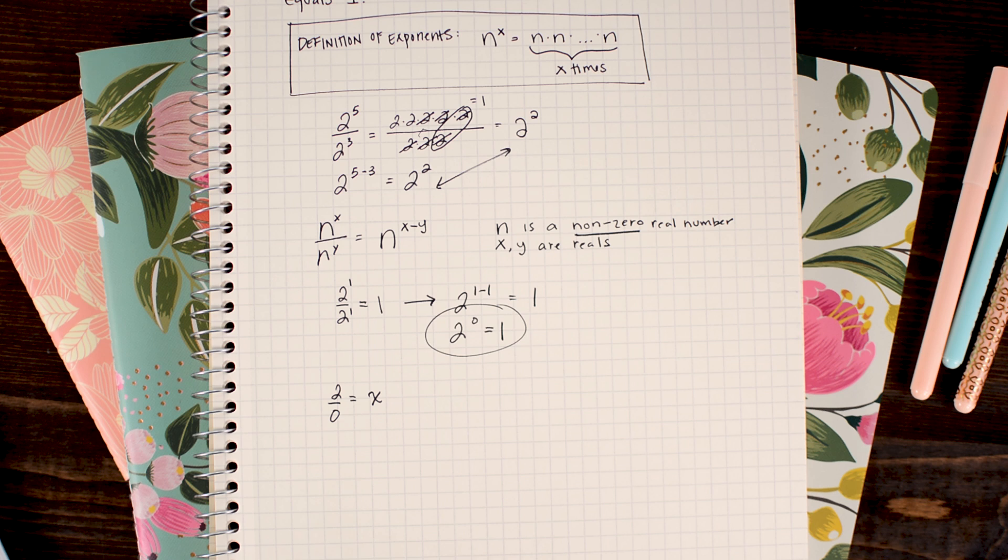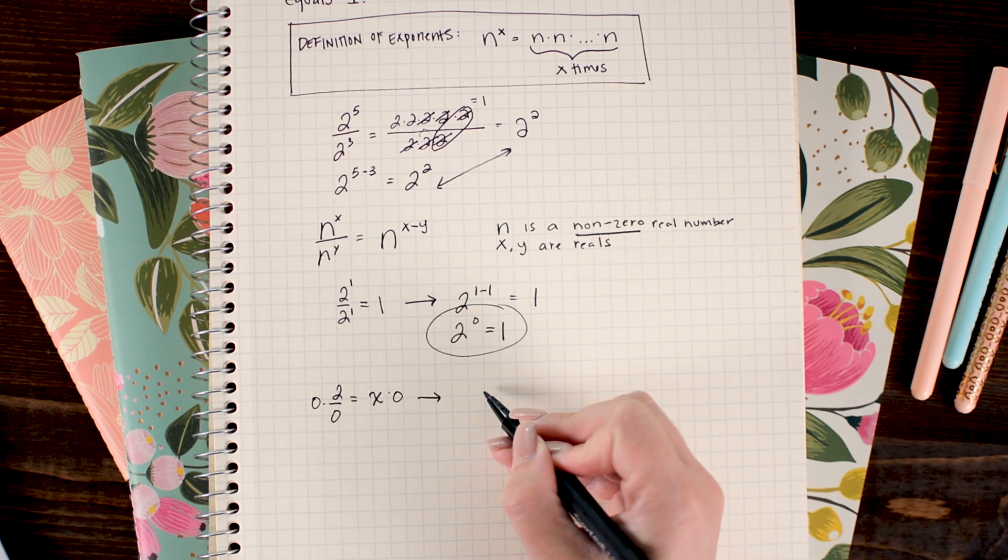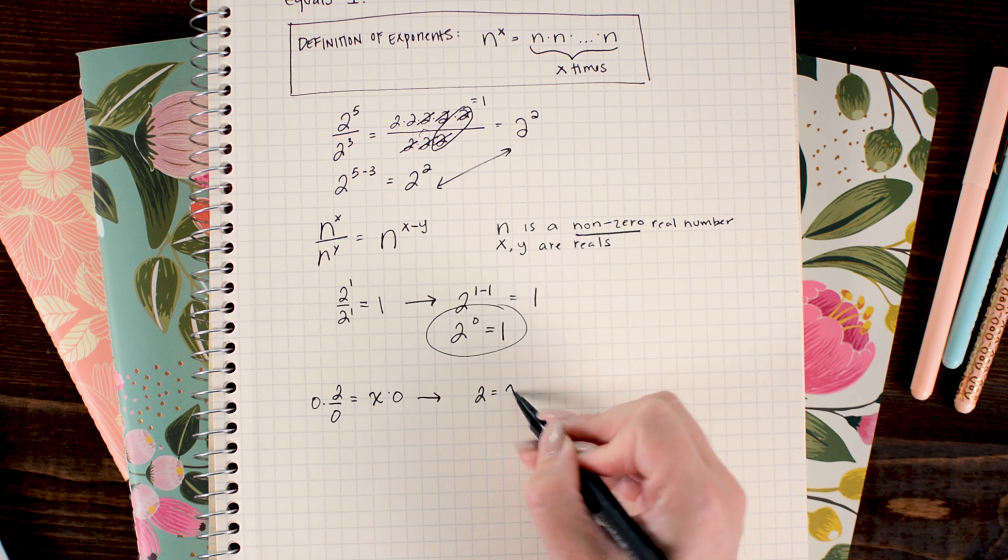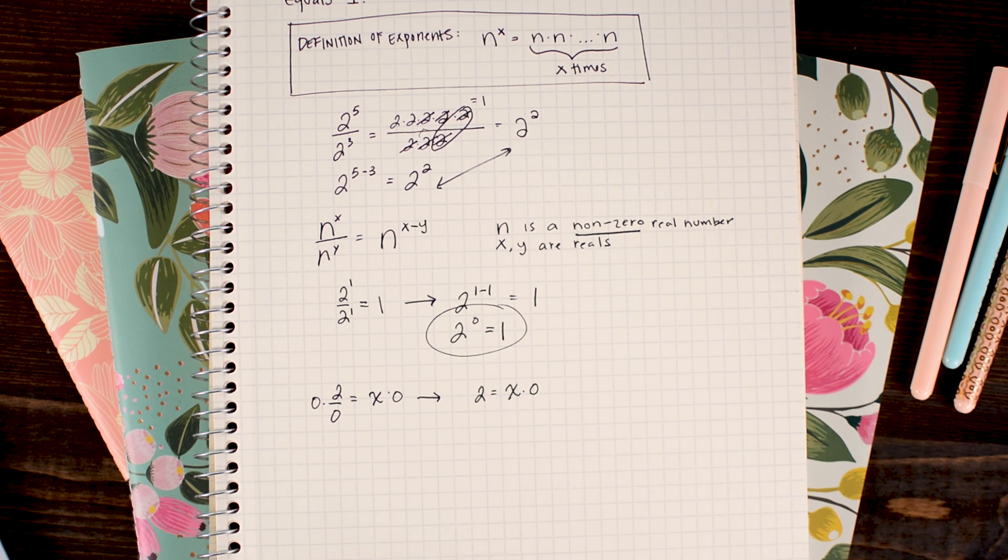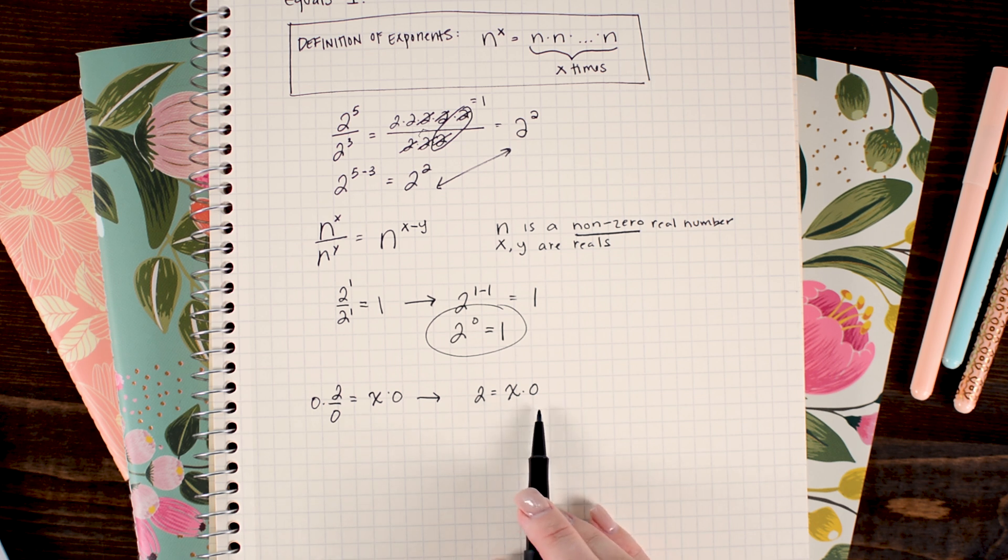Why is that? Why can't we divide by 0? Well, it's pretty easy to see why. Let's just try and I'll show you. So let's say we did 2 divided by 0 and I'm going to set that equal to x because I'm not sure what that's equal to. So I'm going to multiply both sides by 0 and I get that 2 equals x times 0.